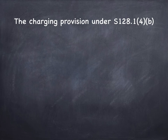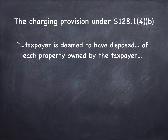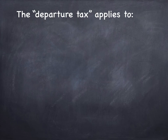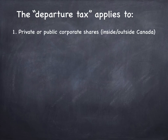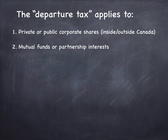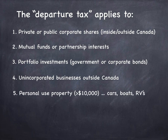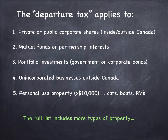What are the property types included in the deemed disposition and reacquisition at fair market value? The charging provision under section 128.1(4)(b) says a taxpayer is deemed to have disposed of each property owned by the taxpayer — very broad, inclusive language. The five main categories included are: private or public corporate shares of companies either inside or outside of Canada; mutual funds or partnership interests; portfolio investments such as government or corporate bonds; unincorporated businesses operating outside of Canada; and personal use property of each item with a fair market value greater than $10,000 — cars, boats, RVs, collectibles, et cetera.